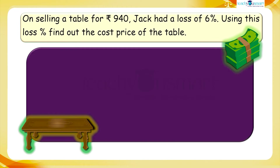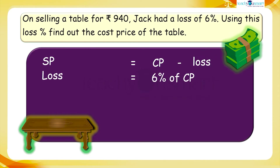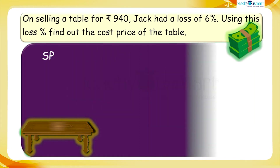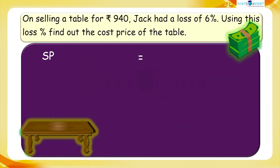We know that selling price equals cost price minus loss. Here, loss equals 6 percent of CP, which equals 6 divided by 100 multiplied by CP. Therefore, SP equals 940.